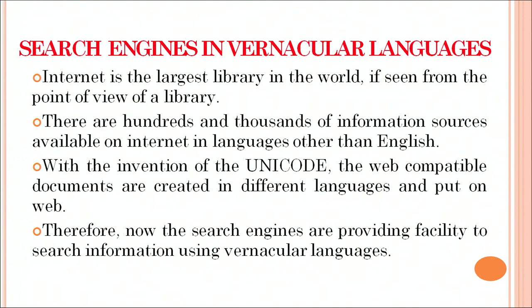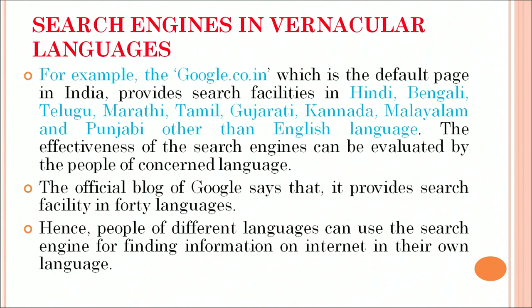Search engines in vernacular languages: internet is the largest library in the world. There are hundreds and thousands of information sources available on the internet in languages other than English. With the invention of Unicode, web-compatible documents are created in different languages and put on the web. Therefore, search engines are now providing the facility to search information using vernacular languages. For example, Google.co.in, the default page in India, provides search facilities in Hindi, Bengali, Telugu, Marathi, Tamil, Gujarati, Kannada, Punjabi, and many other languages. The official blog of Google says that it provides search facility in 40 languages.